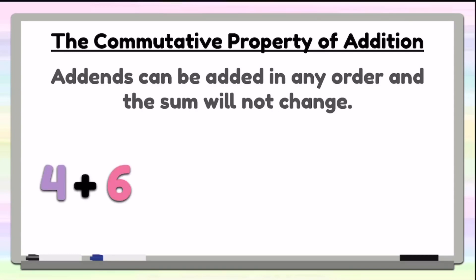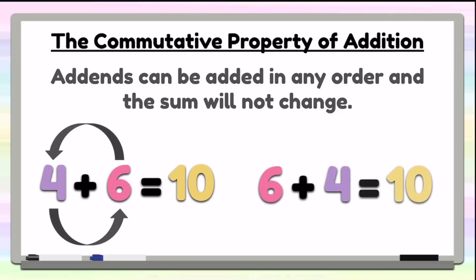For example, here we have 4 plus 6. We know that 4 plus 6 equals 10. Now if we change the order of the addends, the 4 and the 6, and we do 6 plus 4, we know that the sum will still be 10, even if we change the order of the addends.